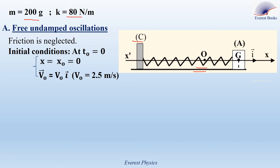Let's start with the free undamped oscillations. In this part, we neglect friction. At time zero, G is initially at O, which means x0 equals zero, and is launched with a velocity V0 equal to V0i, with V0 having a value of 2.5 meters per second.